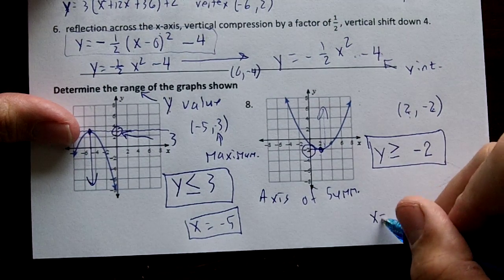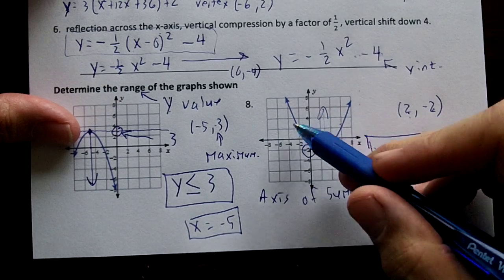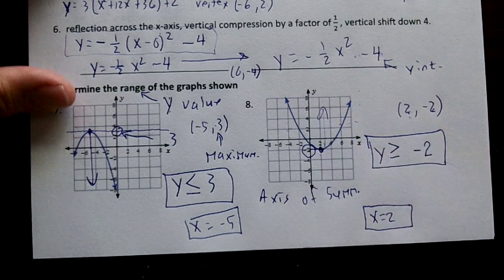And over here, our axis of symmetry would be x equals two. If you fold the line over on two, it would match up.